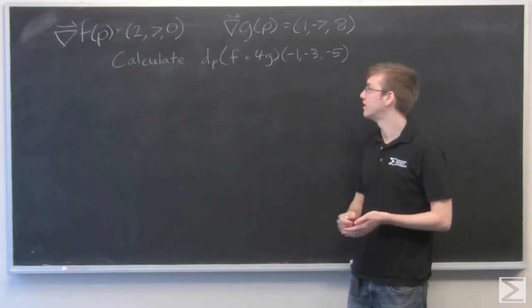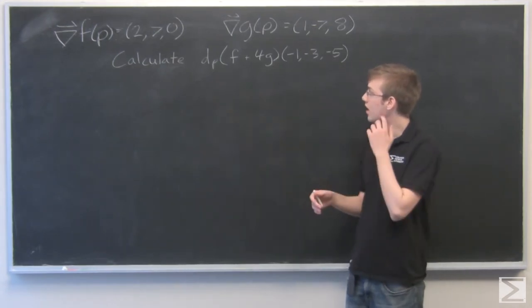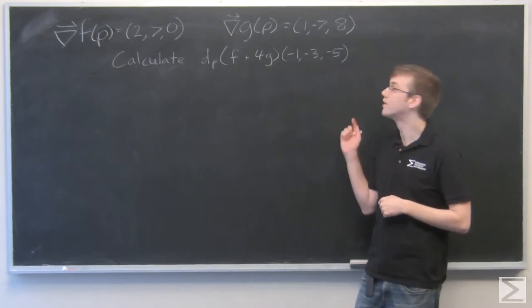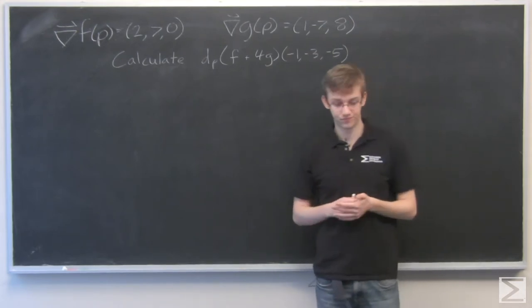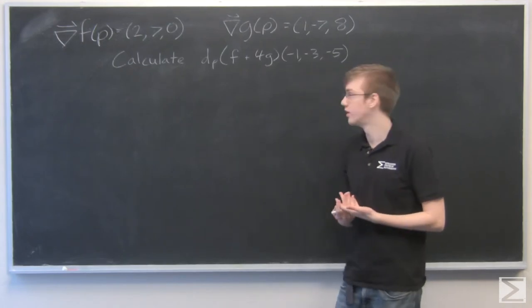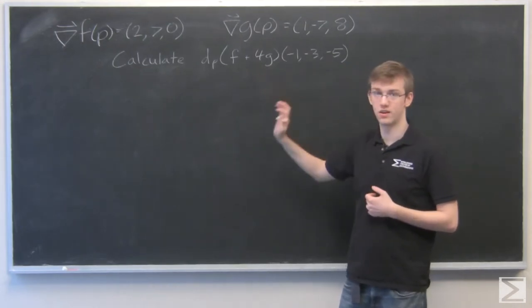And we're asked to calculate the total derivative of f plus 4g with respect to negative 1, negative 3, negative 5. So we can use the linearity of the total derivative to expand this out into separate terms.